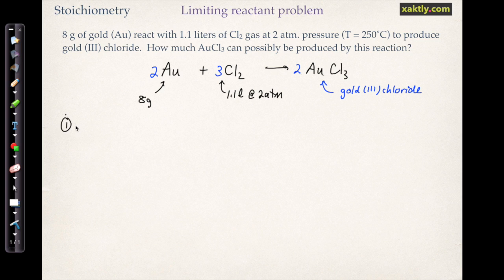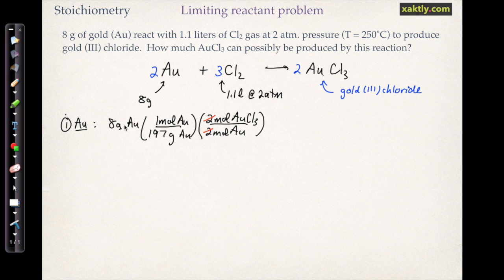So we'll start with our gold. We know that we have 8 grams of gold, and we'll just check and see if this is going to be the limiting reactant. 8 grams of gold, and there are 197 grams of gold in 1 mole of gold. And then using the mole ratios from our balanced equation, we get 2 moles of gold for every 2 moles of gold 3 chloride. So that's not such a big deal, it's just a 1 to 1 ratio, but it helps to go through this procedure anyway. We'll cancel our units.